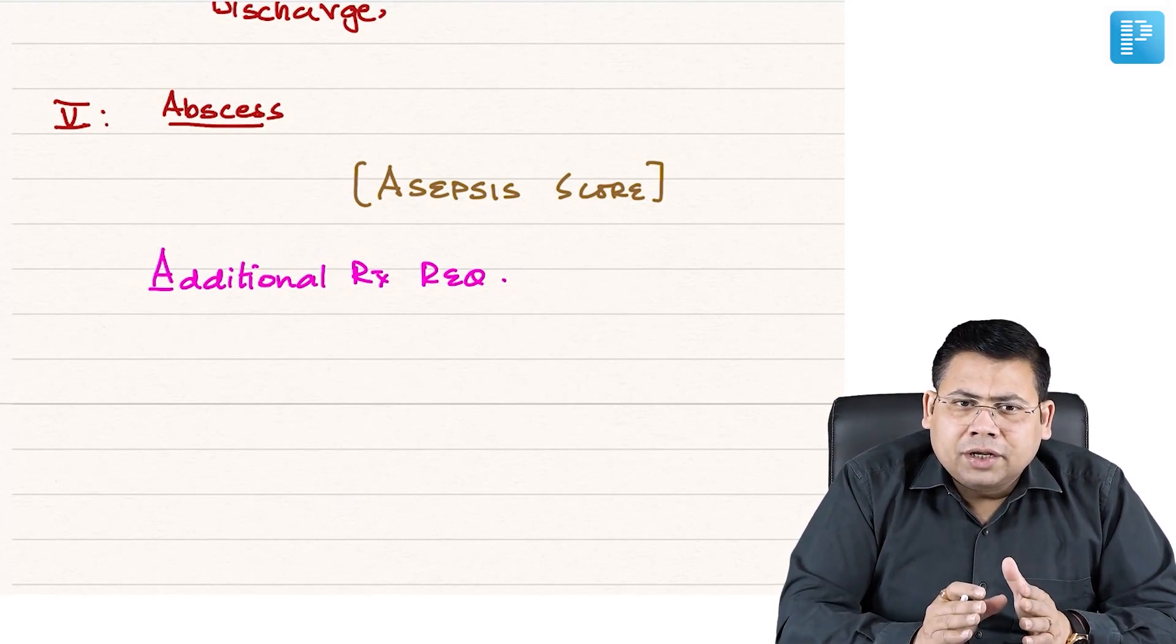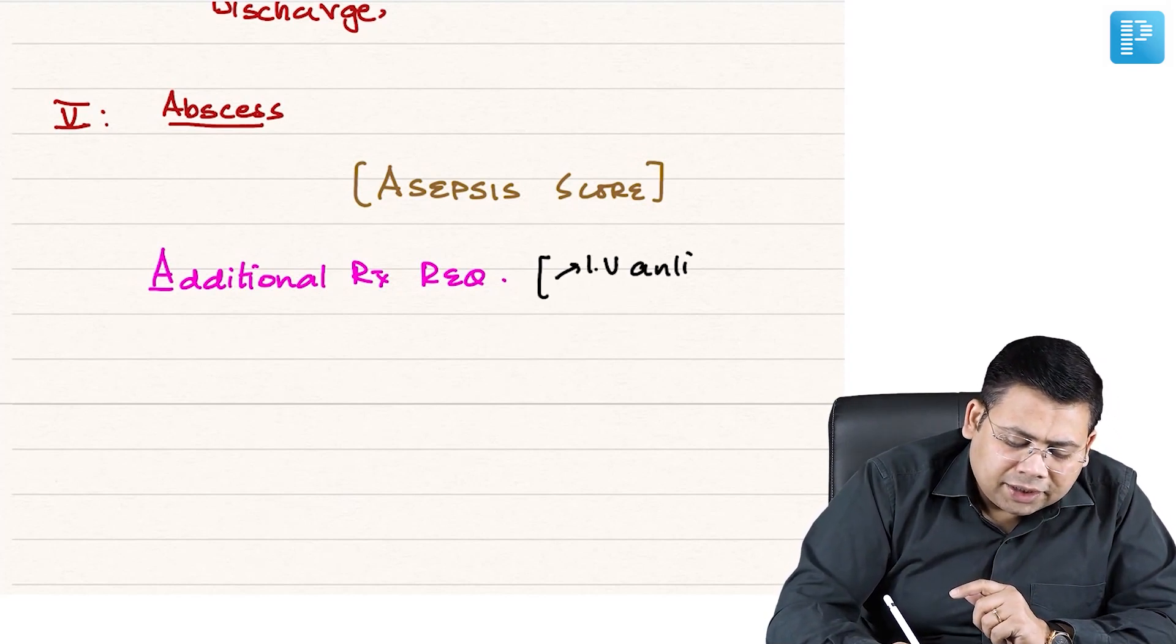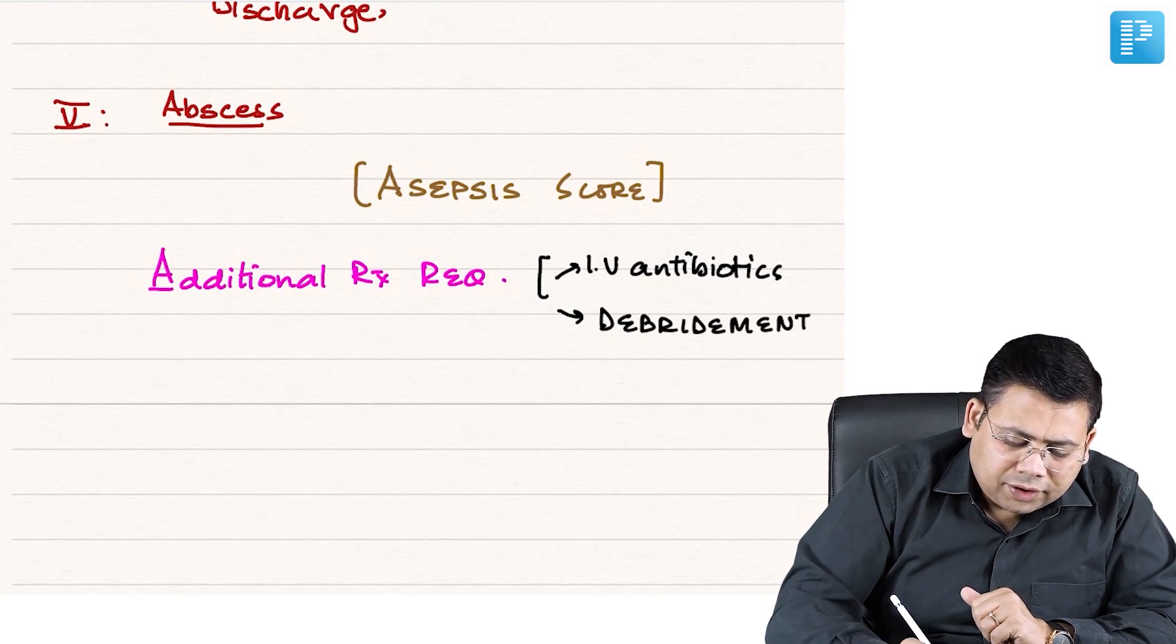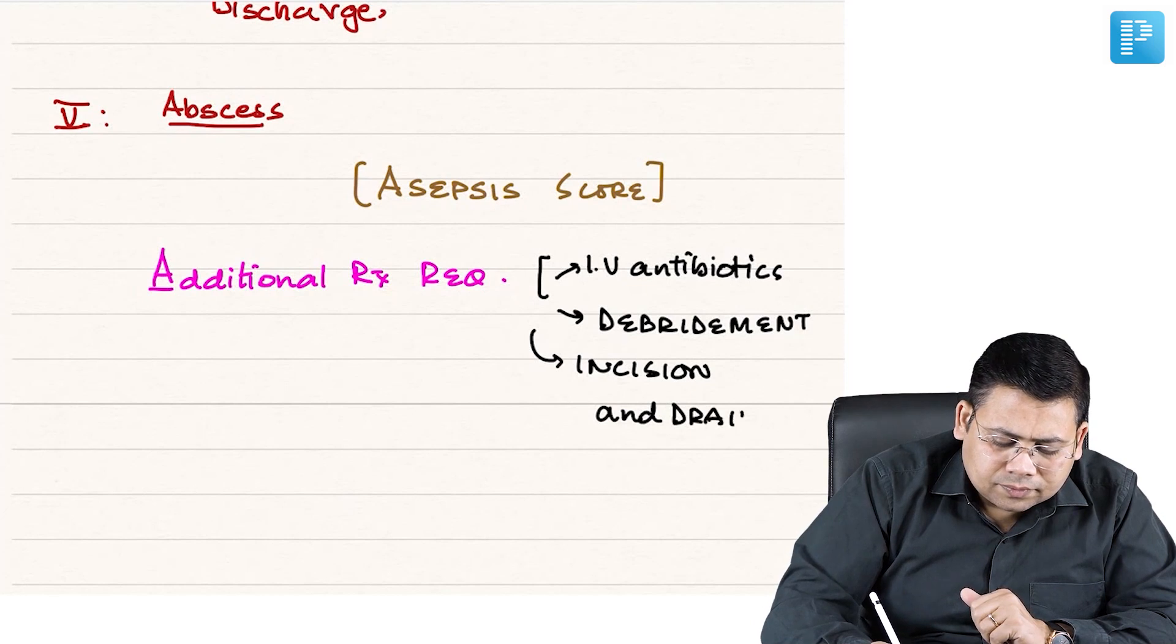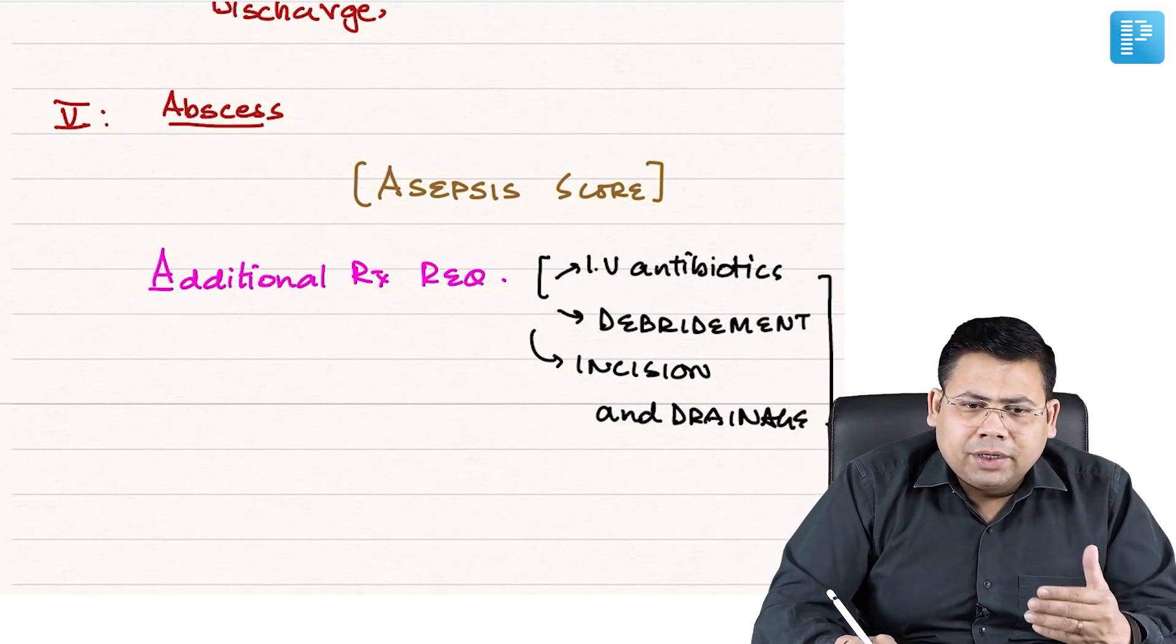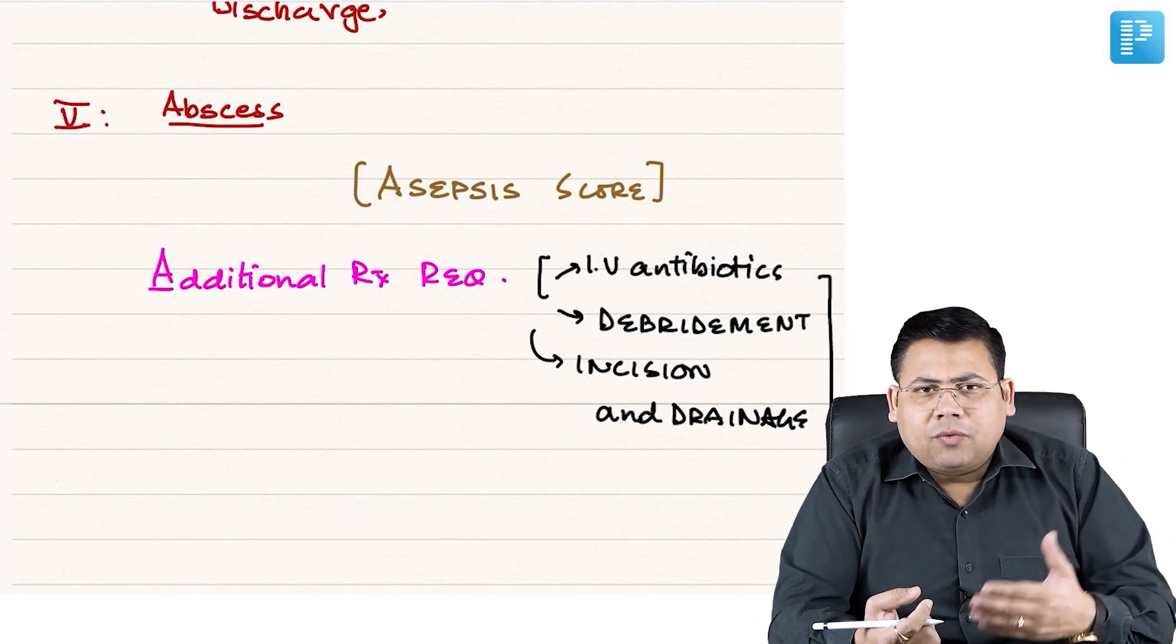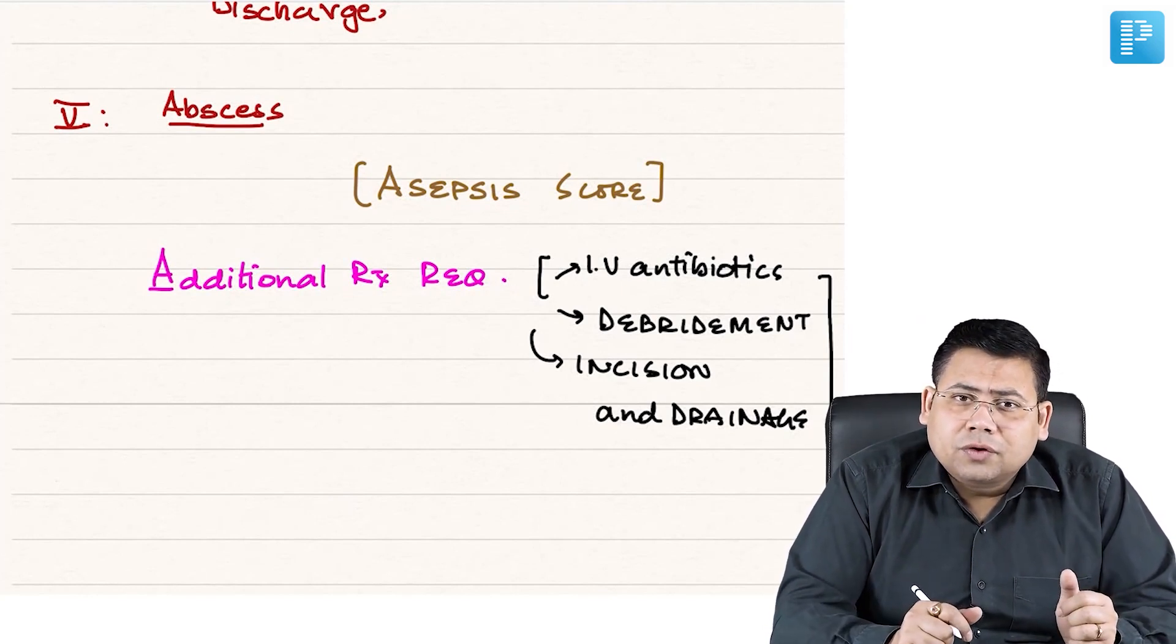Additional treatment like longer doses of antibiotic use, maybe incision and drainage, maybe debridement. So additional treatment required in form of IV antibiotics, debridement, incision and drainage. These are the additional unusual treatments which were done to the patient. This was not anticipated. The patient was brought for lap cholecystectomy and in the post-operative phase developed a port site collection, which may require drainage or broad spectrum antibiotics for a long time.